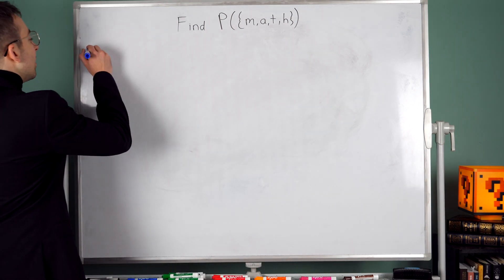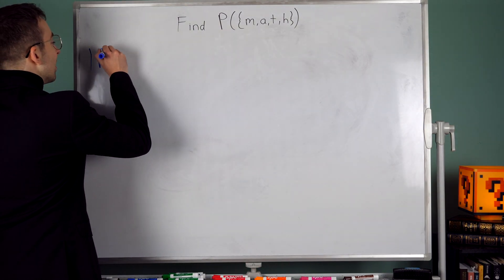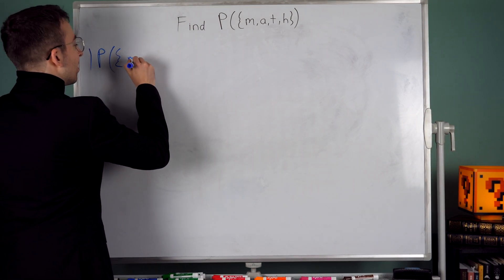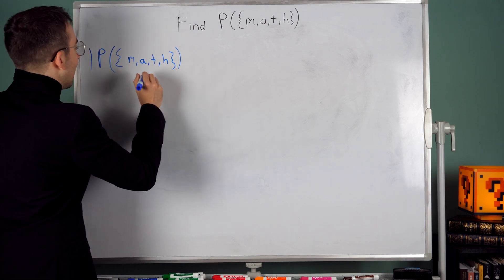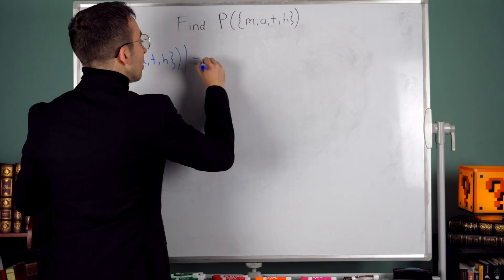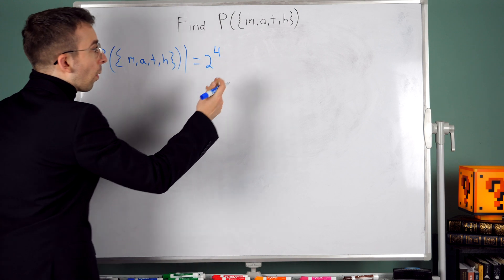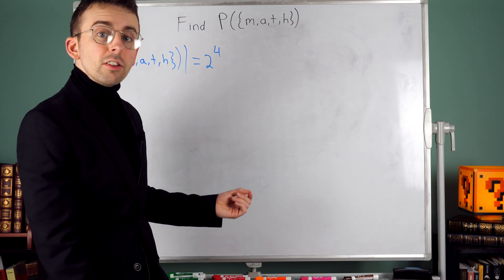So the cardinality of this power set, the cardinality of the power set of the set containing the letters m, a, t, and h, is 2 to the power of 4 because there are four elements.